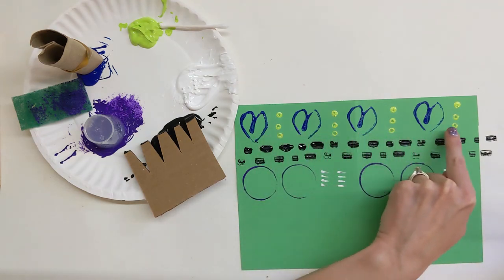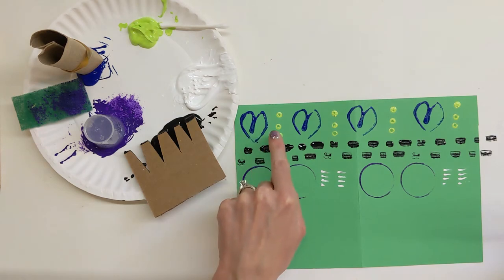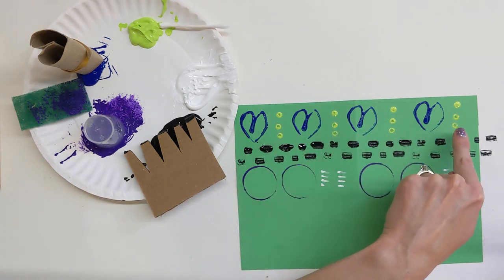What kind of pattern do you think this line is? If you said it's an A-B pattern, you're right. The hearts are A and the dots are B. A-B-A-B-A-B-A-B.